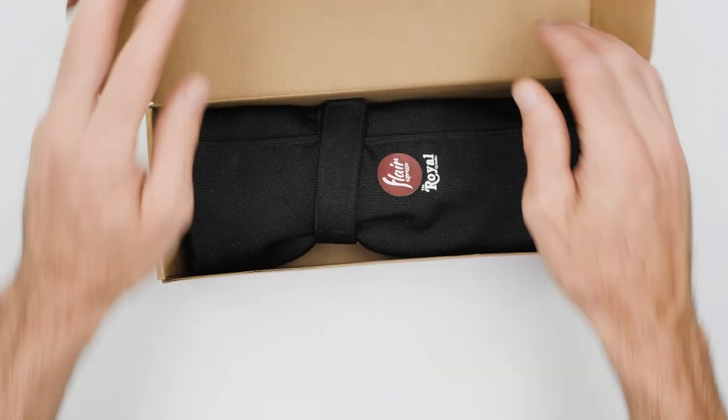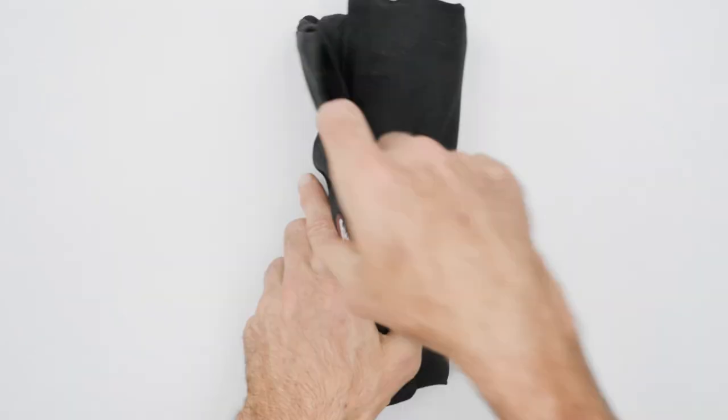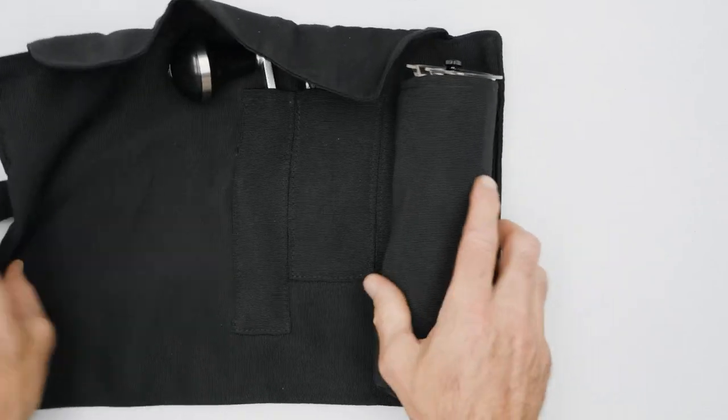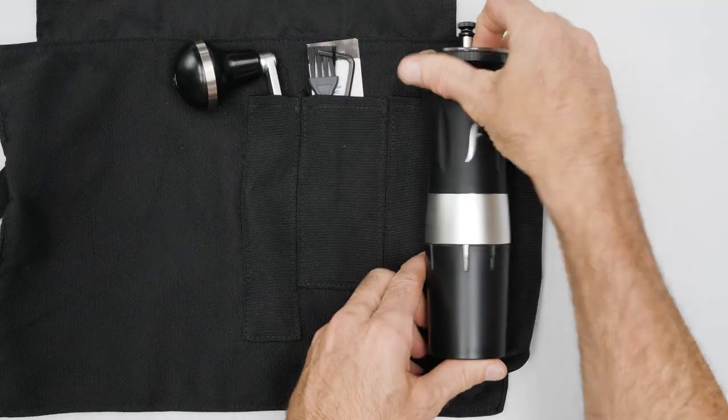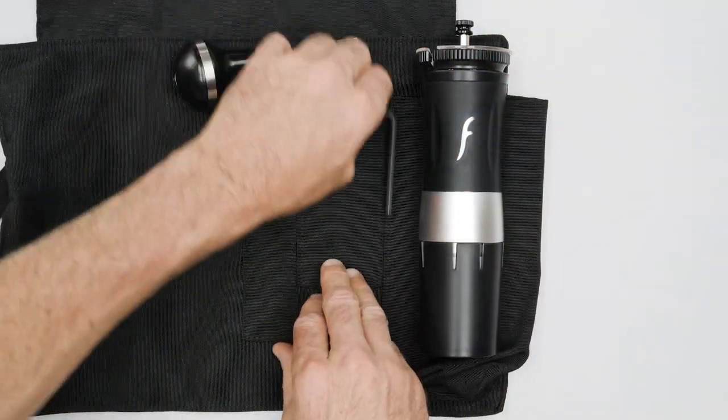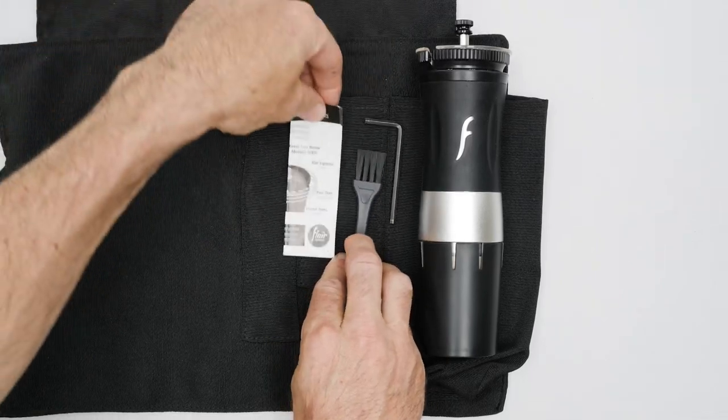The Royal Grinder from Flair Espresso comes with a custom roll bag to make traveling easier and provide storage for tools when you're not. There's a pocket for the grinder, another for tools and manual, and a third to store the crank handle.